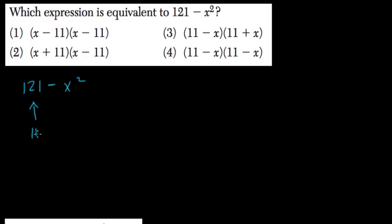11 squared is 121, and x squared is equal to x squared. And this is always equal to, in this form, 11 minus x times 11 plus x.